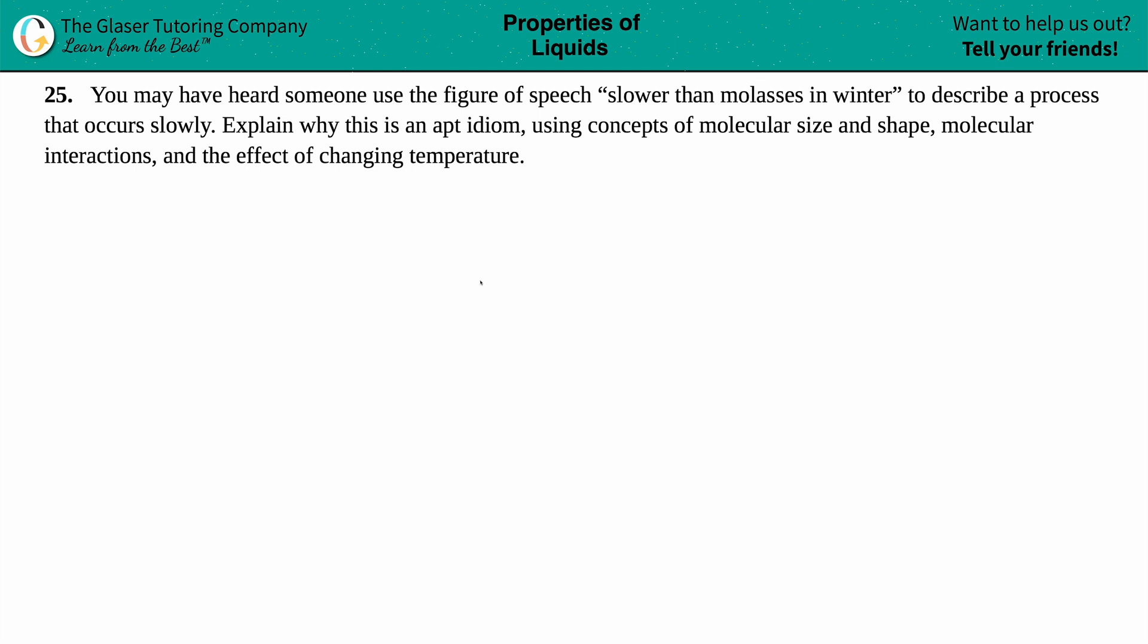Number 25. You may have heard someone use the figure of speech slower than molasses in winter to describe a process that occurs slowly. Explain why this is an apt idiom using concepts of molecular size and shape, molecular interactions, and the effect of changing temperature.